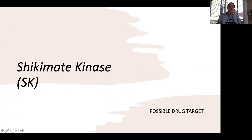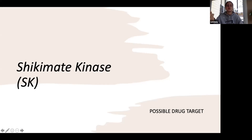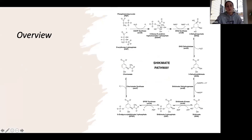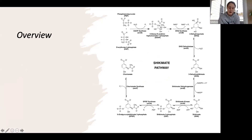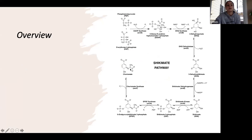I'll be talking about a specific enzyme in the shikimate pathway called shikimate kinase, and it's a possible drug target. This is just a review of the shikimate pathway. It's a seven-step catabolic pathway that's found in plants, fungi, and bacteria, and it leads to the synthesis of chorismate, which is a molecule necessary to make aromatic amino acids.